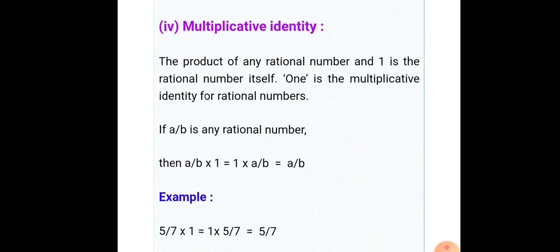Multiplicative identity: 1 is the multiplicative identity. If you multiply any rational number by 1, you always get the same rational number. For example, you can take any number like 1/3 or 7/8 and multiply by 1 — you always get the same result. Here we multiply 5/7 by 1 and get 5/7.